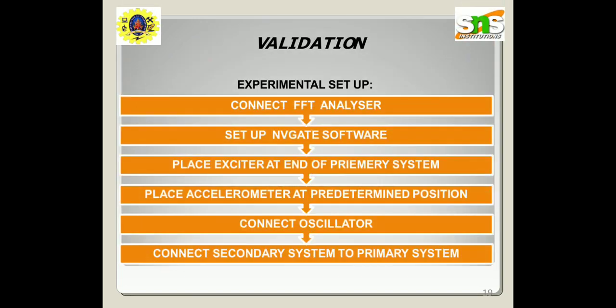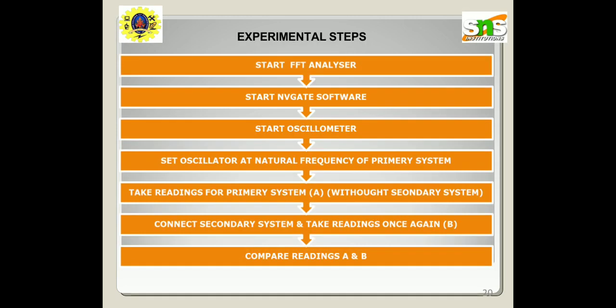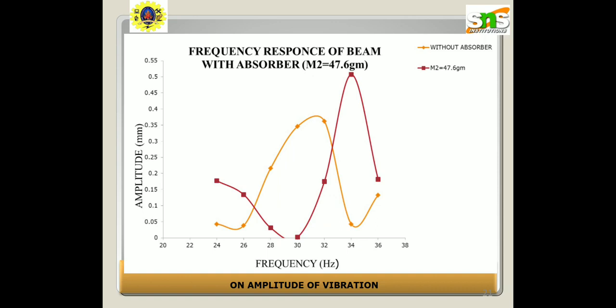For validation on the experimental setup: connect the FFT analyzer, set up the Nvis software, place the exciter at the end of the primary system, place the accelerometer at a predetermined position, connect the oscillator, and connect the secondary system to the primary system. Then set the oscillator to the natural frequency of the primary system, take readings for the primary system without the secondary system, then connect the secondary system and take readings again, and compare readings A, B, and C.